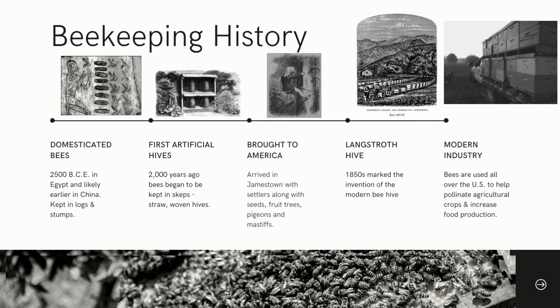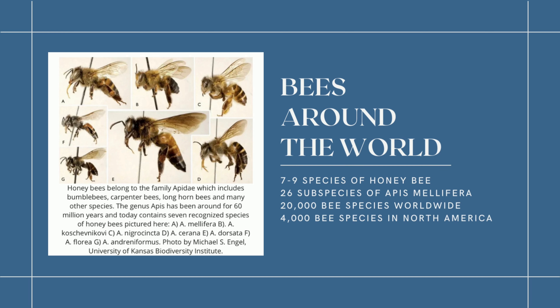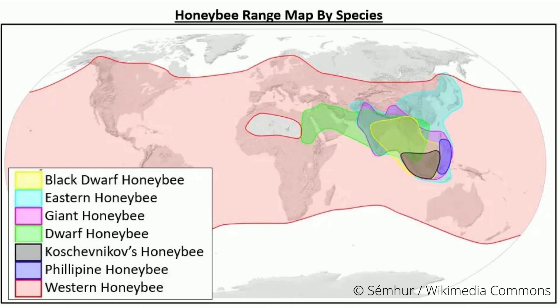Before we dig into the different bees around the world, it's important to realize that beekeeping history is a long one, and that humans and bees have had a close relationship since pretty much the beginning of civilization. There are seven to nine species of honeybee, 26 subspecies of Apis mellifera, and 20,000 bee species worldwide consisting of non-honeybee species, and 4,000 bee species just in North America. I share these numbers primarily to give you an idea of how diverse this family of creatures is.